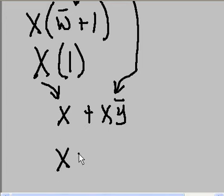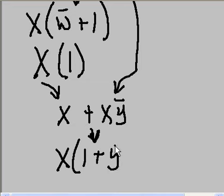I can factor x out of both terms. x times what gives me x? 1. Bring down the OR. x times what gives me x y-naught? The answer is y-naught.